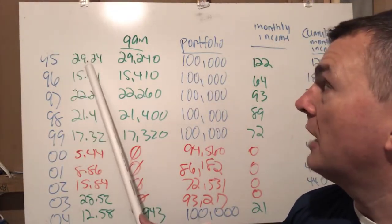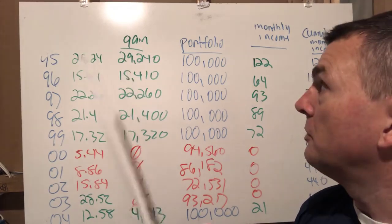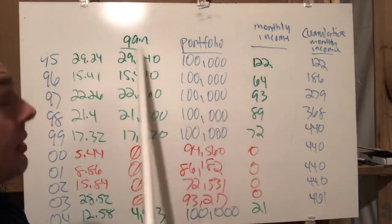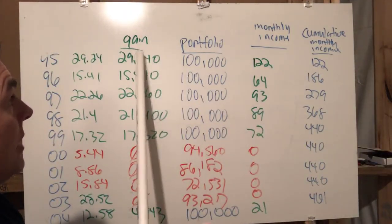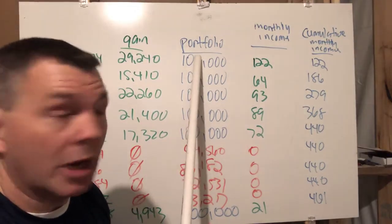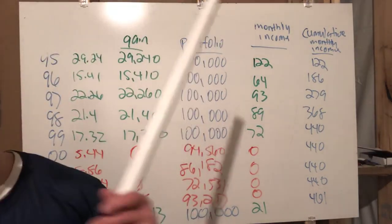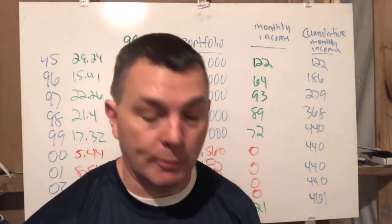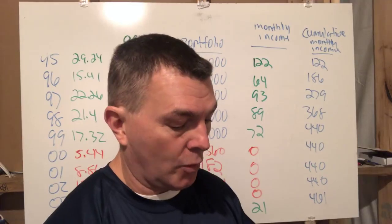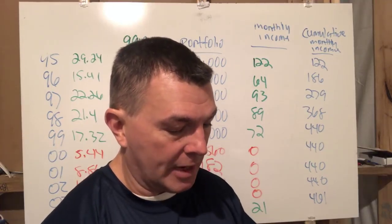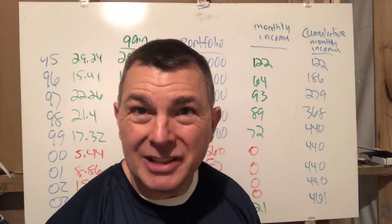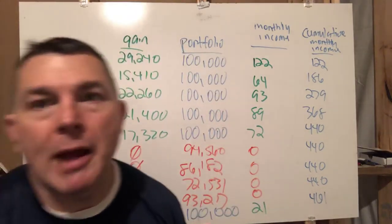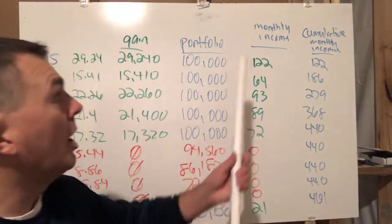In 1995 we had a hundred thousand dollars. The portfolio was up twenty-nine point two four percent, which means we had a gain of twenty-nine thousand two hundred forty dollars — rocket science, right? We took that twenty-nine thousand two hundred forty gain, which left our portfolio at a hundred thousand dollars. Taking that gain to my trusty calculator: twenty-nine thousand two forty times point-oh-five equals fourteen hundred sixty-two dollars annual income, divided by twelve gives us one hundred twenty-two dollars a month.